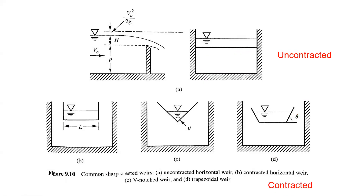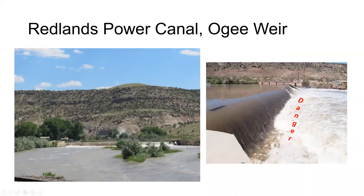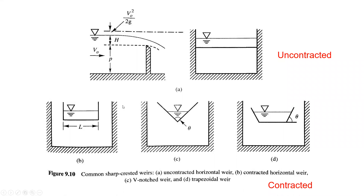We'll start to define some terms for weirs, introducing them conceptually before deriving the weir equation. Weirs are classified as contracted and uncontracted. Uncontracted means we don't force the water to contract as it moves through the weir — it just spans the channel. Contracted forces the water into a smaller cross-sectional area. There are different equations and parameters to consider for each type.